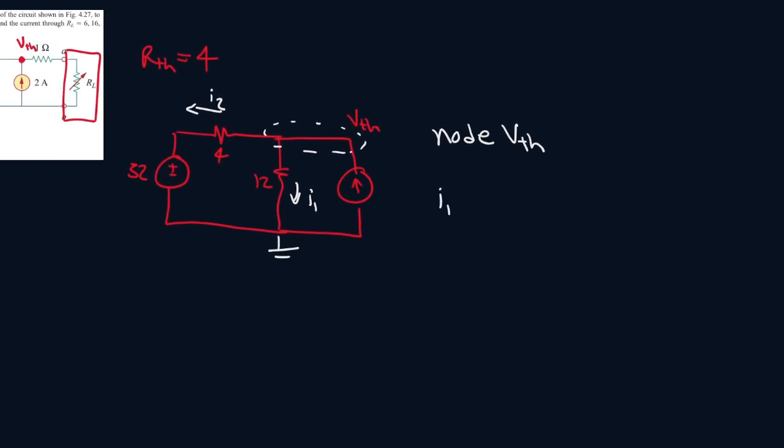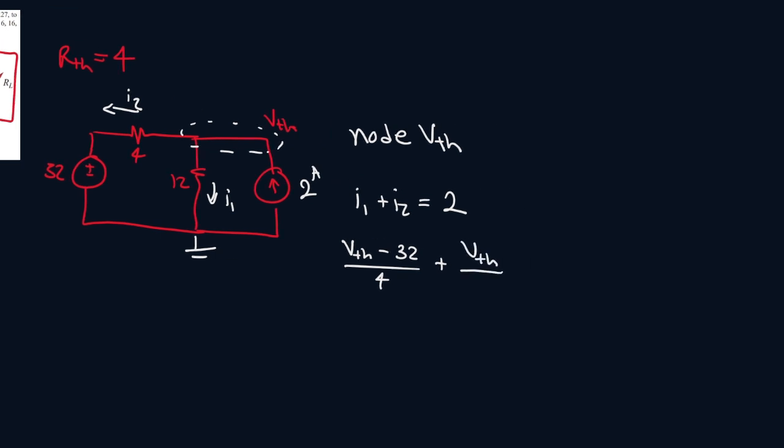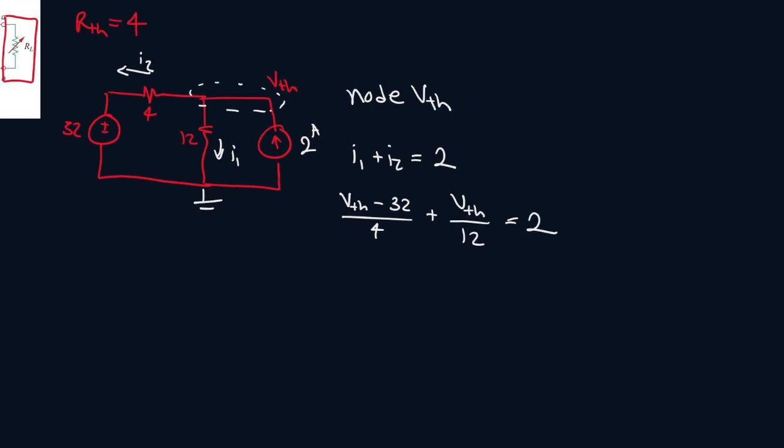So it will be I1 plus I2 equals... This was 2 amps. I forgot to include that, 2 amps. So I1 will be VTH minus 32 all over 4 plus VTH minus 0 all over 12 equals 2. Now let's solve for VTH.